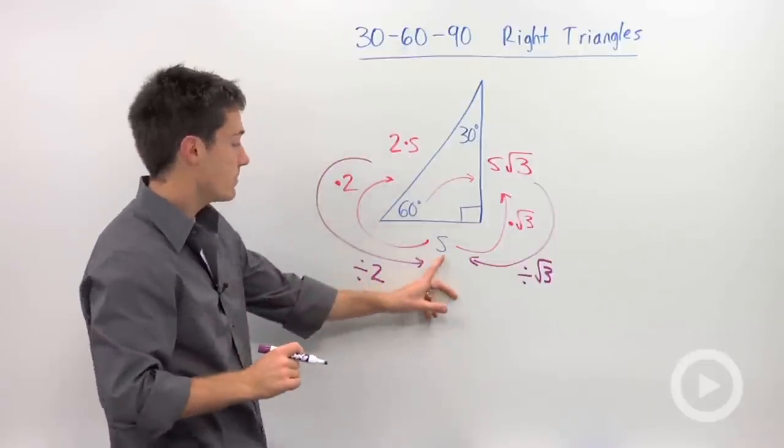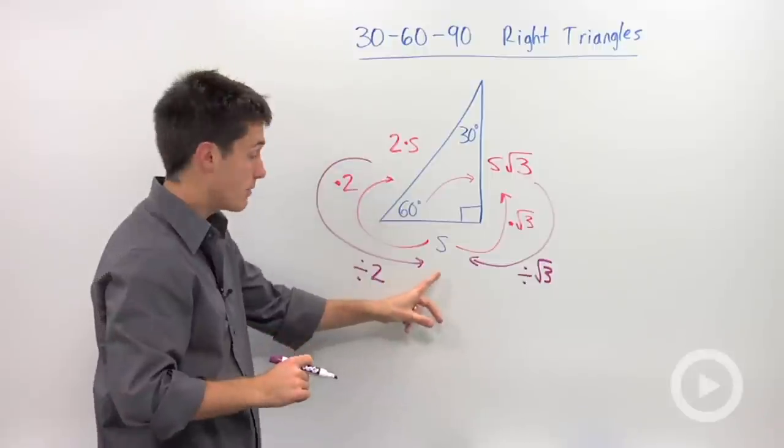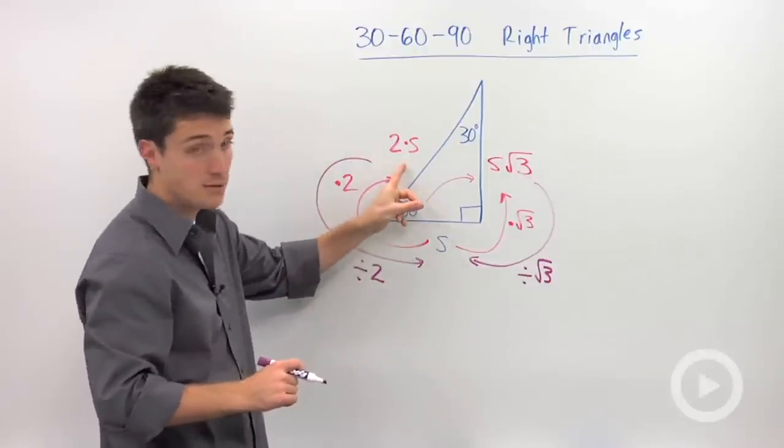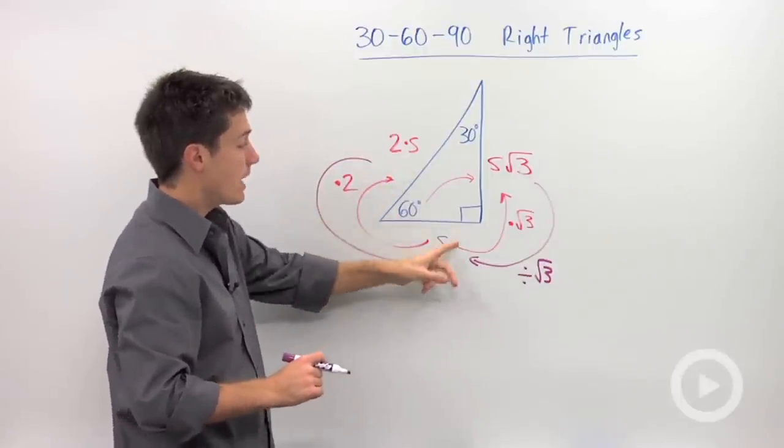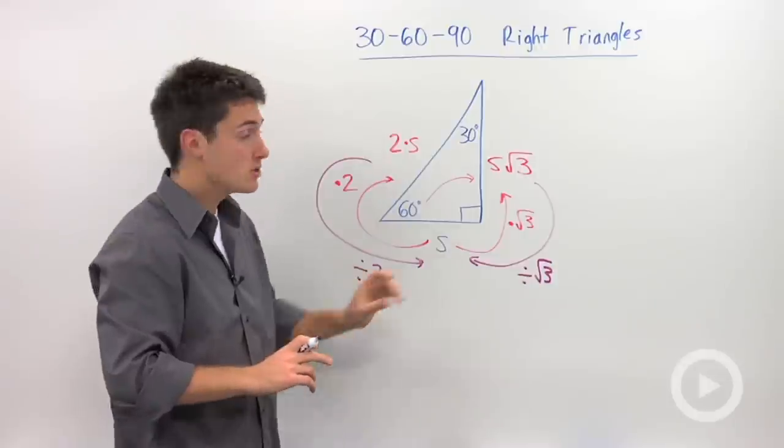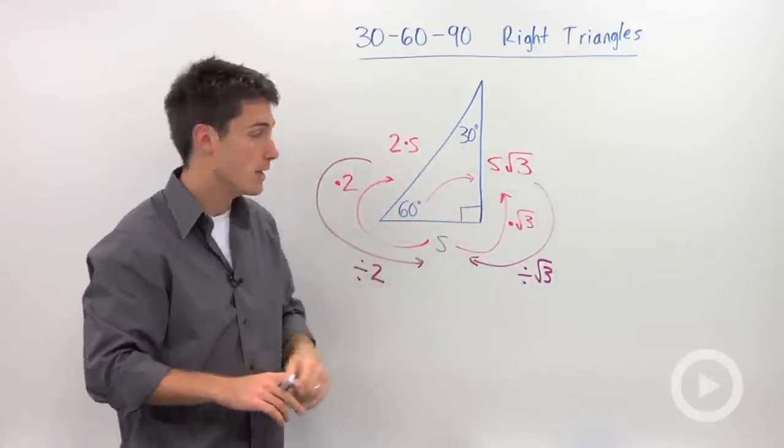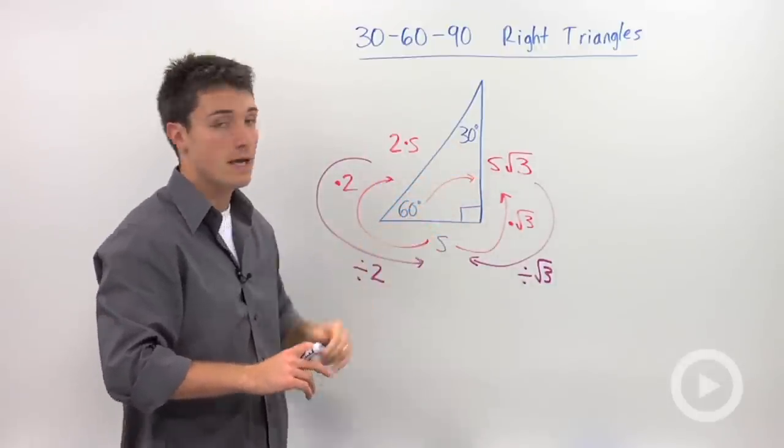So the key leg in this triangle is this shorter leg, because from here you can find your hypotenuse by multiplying by two, and you can find your longer leg. So use these shortcuts whenever you see a triangle with 30, 60, and 90 degrees.